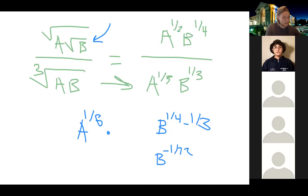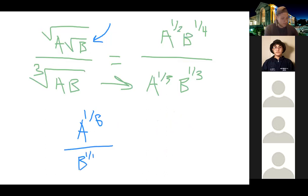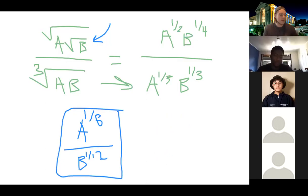Because we have that negative exponent on B, I'm going to rewrite it in the denominator, so it becomes B to the one-twelfth. The final answer is A to the one-sixth over B to the one-twelfth. A student confirms that matches what they got for part B of problem 4.